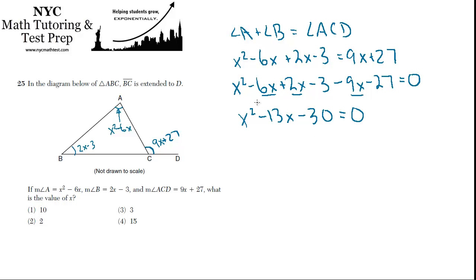Now, can we factor this? Yes, we can. We need to multiply to negative 30 and add to negative 13. So how about x minus 15 and x plus 2? That would work, right? Because it would be negative 30 and minus 15 plus 2 is negative 13. So that'll do it.